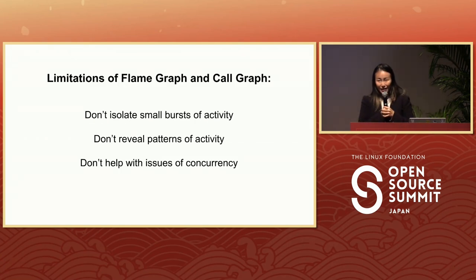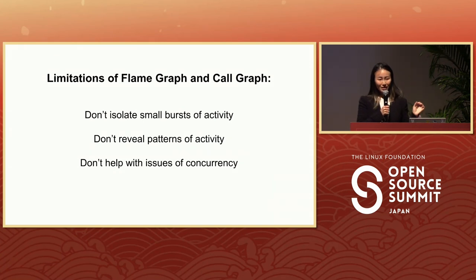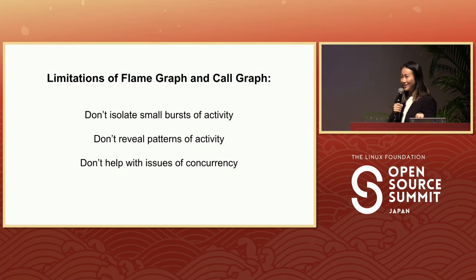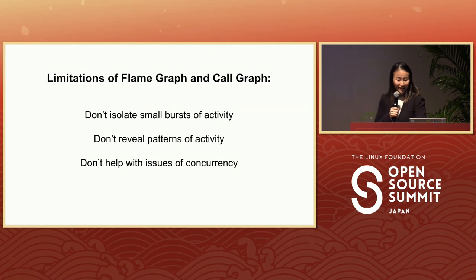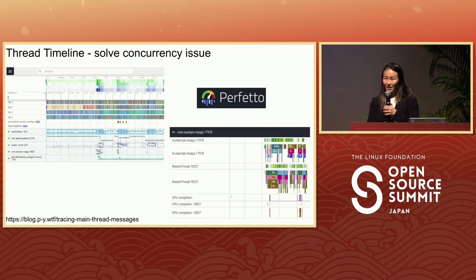The flame graph and call graph share common limitations as well. Because they don't have a time component and cannot do aggregation, they cannot isolate small bursts of activity, they don't reveal patterns in activity, and they cannot help with issues of concurrency. Let's look at the last one — issues of concurrency — which is something that a thread timeline can help solve. One example of a thread timeline is the Perfetto tool.